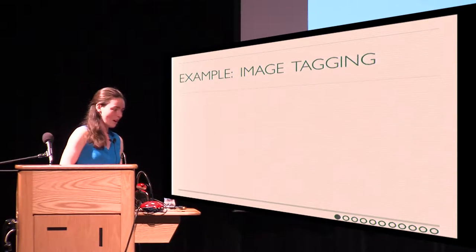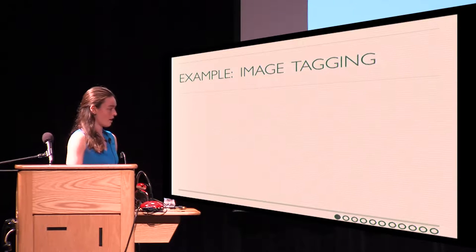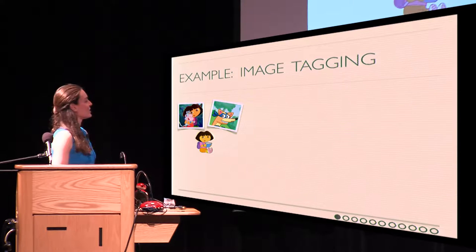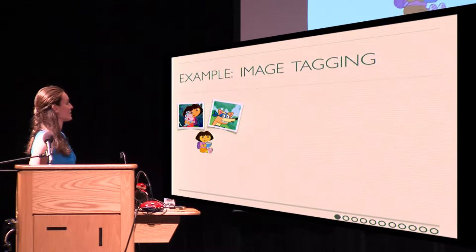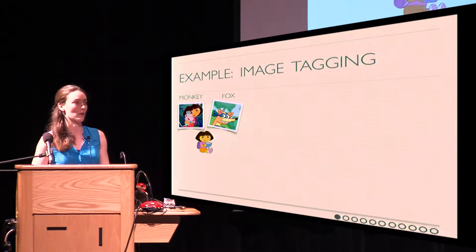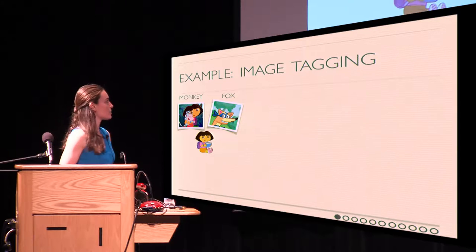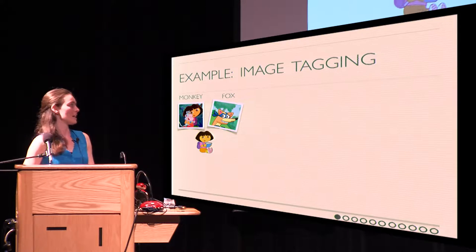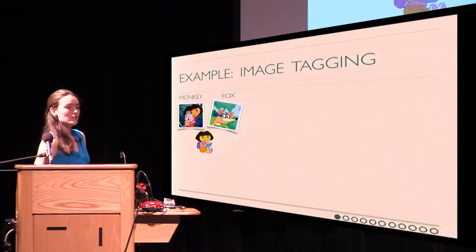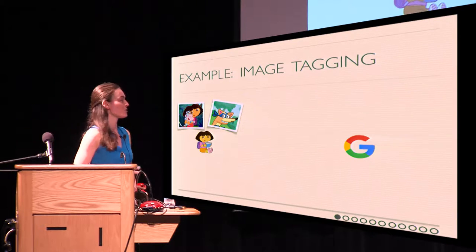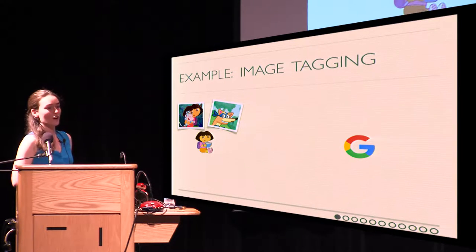Let's start with an example and consider the following scenario. We have Dora the Explorer. She goes on tons of adventures and takes a lot of pictures, and she would like to assign tags to those pictures describing what is on them. However, she doesn't have the time to do this by hand because she has to leave for her next adventure, so she would like to do this automatically. Ideally she would like to outsource this computation to a third party, for example Google, who can do this for her, but of course the content of her data — in this case images — might be private.